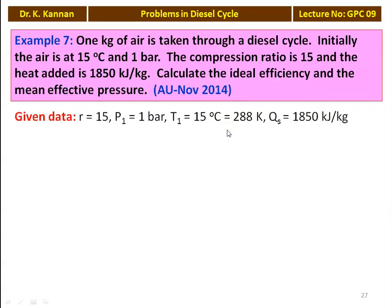Example number 7 from the November 2014 question paper: 1 kg of air is taken through a Diesel cycle. Initially the air is at 50 degrees Celsius and 1 bar. The compression ratio is 15 and the heat added is 1850 kilojoules per kilogram. Calculate the ideal cycle efficiency and the mean effective pressure. Given data: R equals 15, P1 equals 1 bar, T1 equals 15 degrees Celsius which is 288 Kelvin, and heat supplied equals 1850 kilojoules per kilogram.